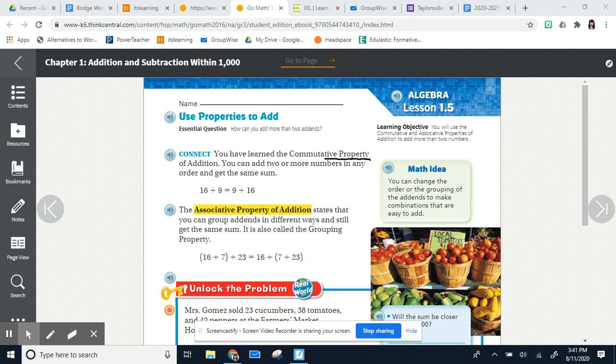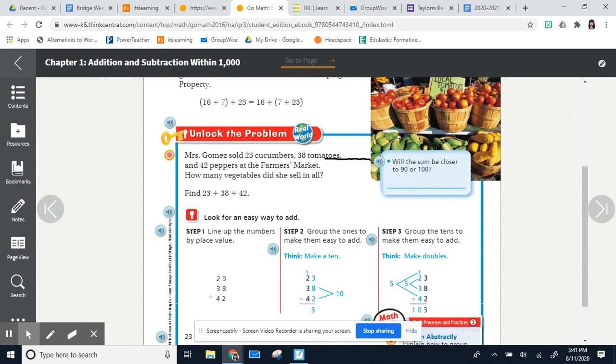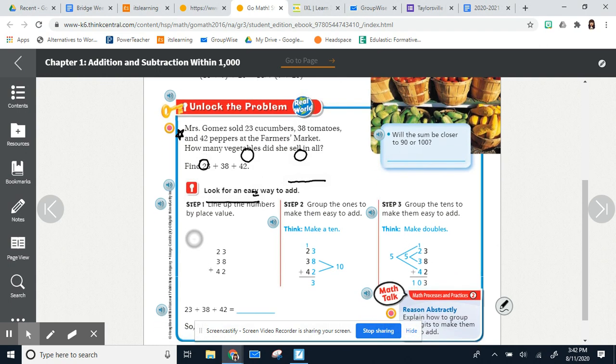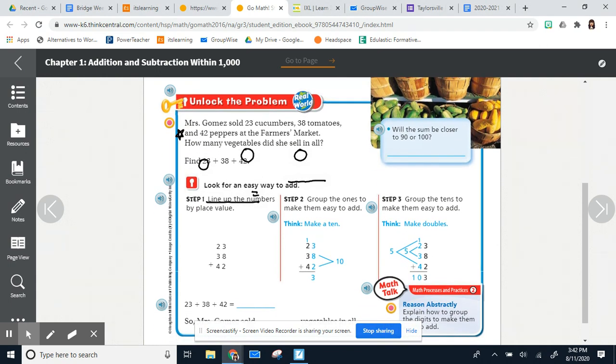So you're gonna see this in action in unlock the problem. Mrs. Gomez sold 23 cucumbers - I'm going to circle my numbers - 38 tomatoes and 42 peppers at the farmers market. How many vegetables did she sell in all? So I see the words sell and all and I know that means I am adding. So we are adding 23 plus 38 plus 42. It's really hard to add them like this, right? So the best thing to do, and I will always tell you to do this, is stack them just like they did below.